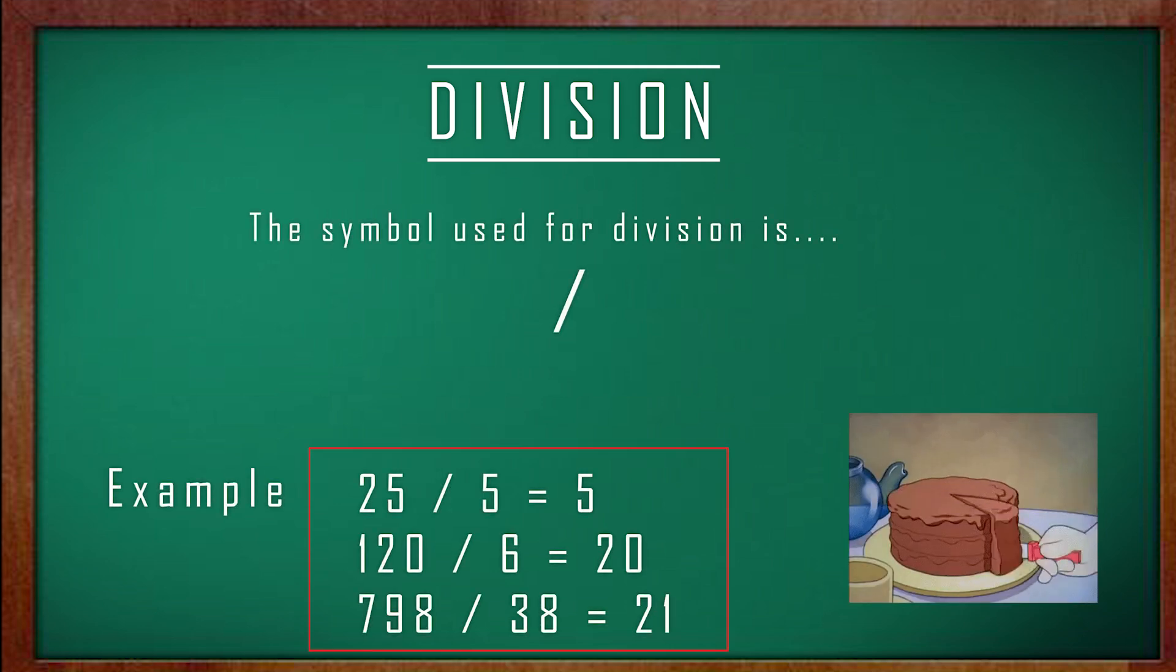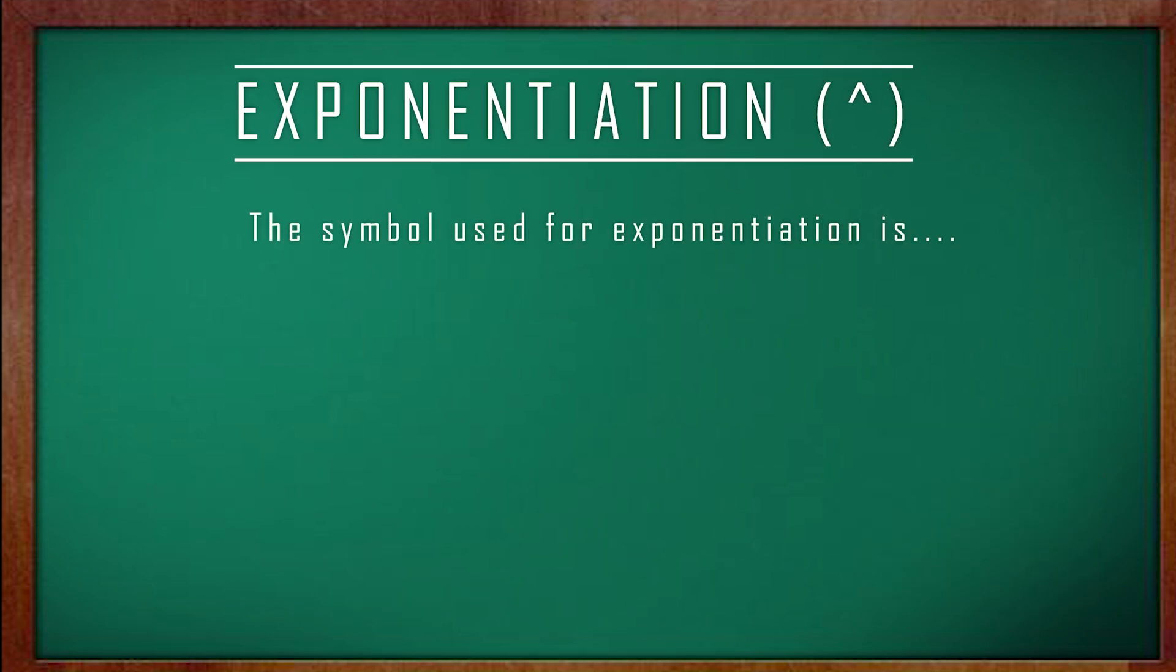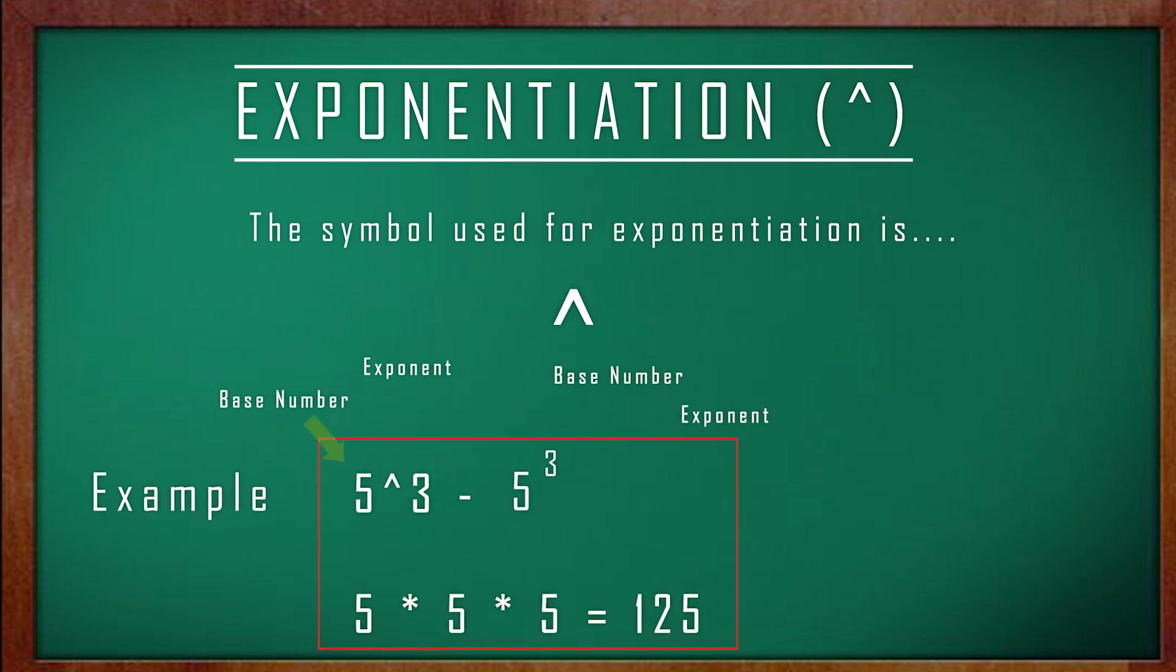Now that we've gone over the basics, we're going to have a little look at exponentiation. In exponentiation, we multiply the base number by itself the amount of times indicated by the exponent. For example, here we multiply 5 by itself 3 times, also known as 5 cubed.